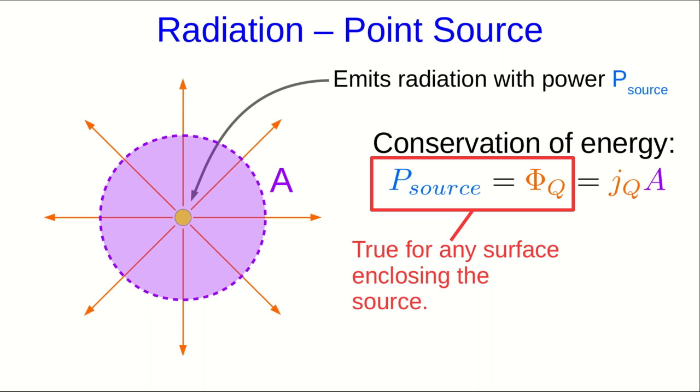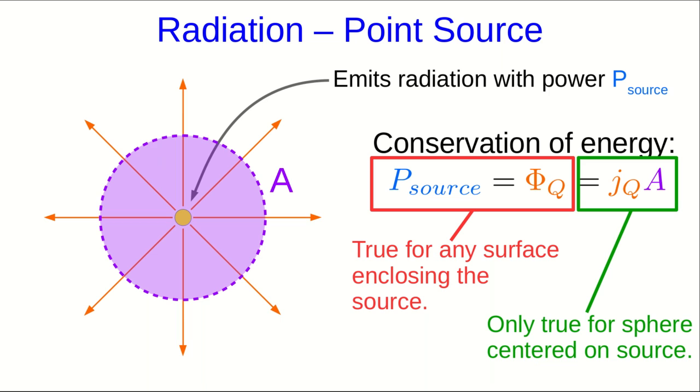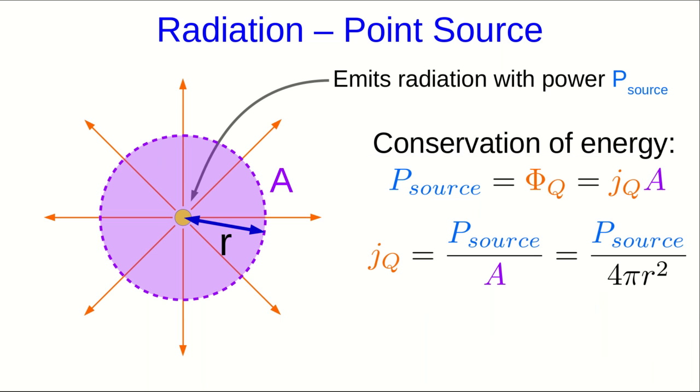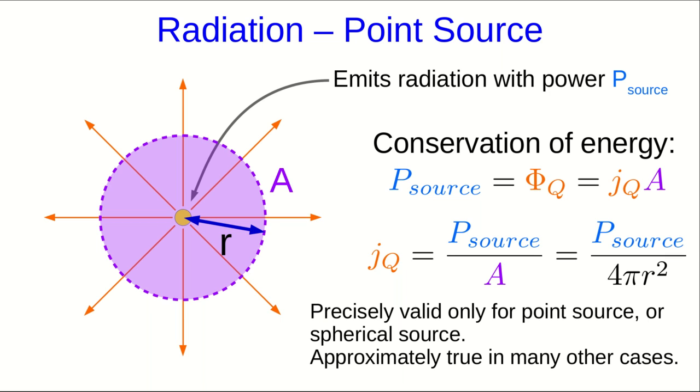This now lets us find an expression for the flux density at any distance. So, if our sphere has a radius r, then just solving for the flux density, we see that it's the power of the source divided by the area, and that area is just the area of a sphere, 4πr². And I'll remind you that this is precisely valid only for a point source or for a spherical source. But very often, it's approximately true for many other things, particularly when we're looking at radiation far away from a source.